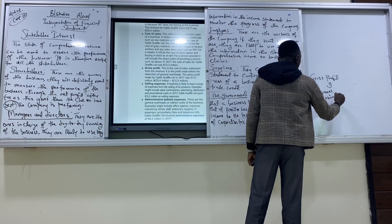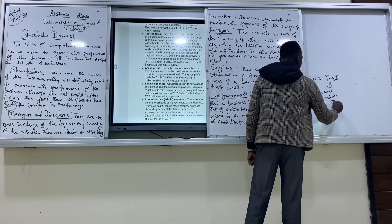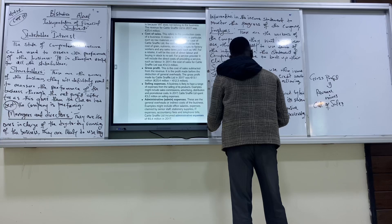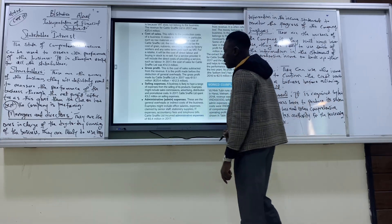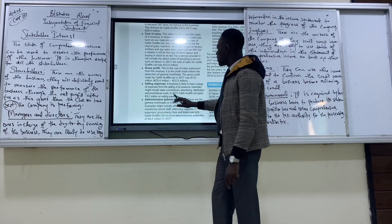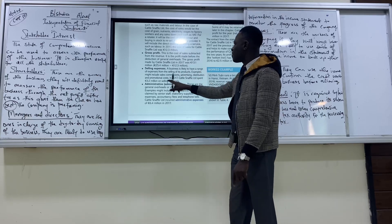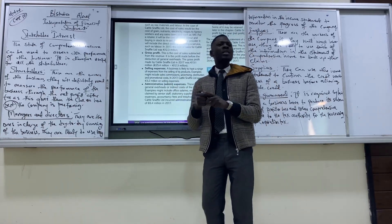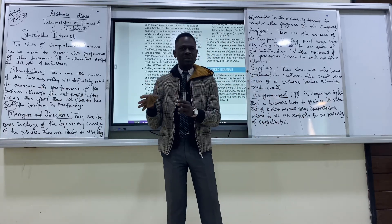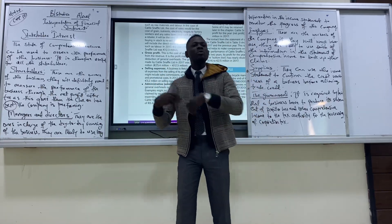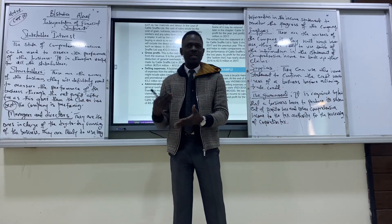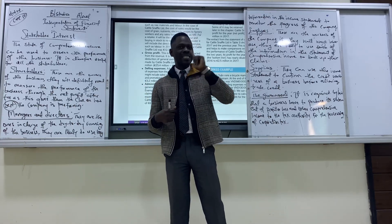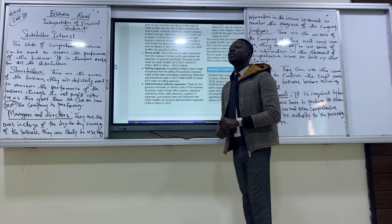Revenue minus cost of sales — that's how we get our gross profit. For selling expenses, whatever you spend as a business to ensure that you are able to sell the product are your selling expenses, and they have to be taken away from your gross profit because they are an expenditure — for example, advertising.